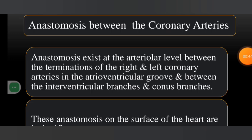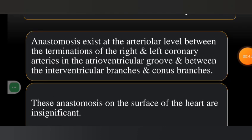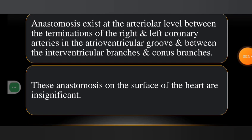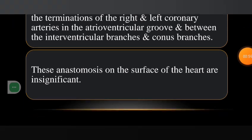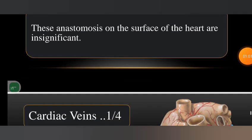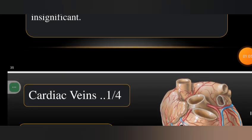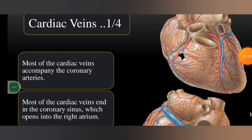Anastomoses between the coronary arteries exist at the arteriolar level between the terminations of the right and left coronary arteries in the atrioventricular groove, and between the interventricular branches and conus branches. These anastomoses on the surfaces of the heart are considered insignificant.